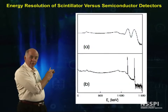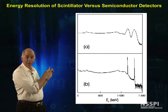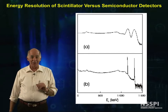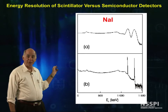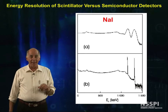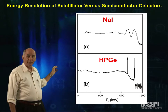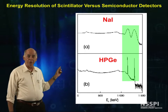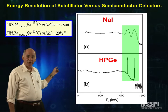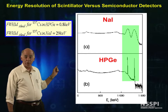You can see here the reason that we go to all this trouble to make and use semiconducting detectors. The first picture is a cobalt-60 spectrum taken with a sodium iodide detector, and the second is a spectrum taken with a high purity germanium. Notice the resolution of the two peaks in the high purity germanium — what a difference 30 times better resolution can make.